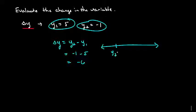we'll go ahead and plot those points. So of course y2 is going to be to the left because it's negative 1 and y1 will be to the right because it's positive 5. Notice that we're moving back this way, 6 units. So our delta y is negative 6.